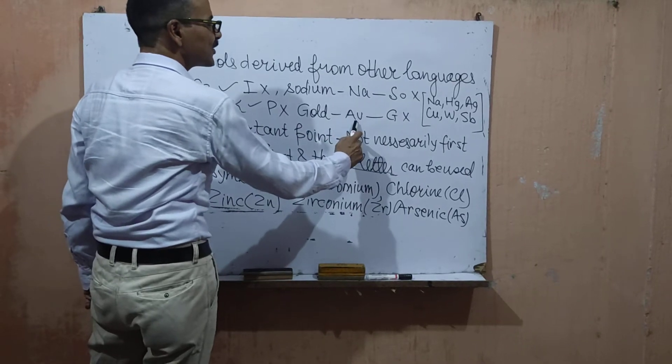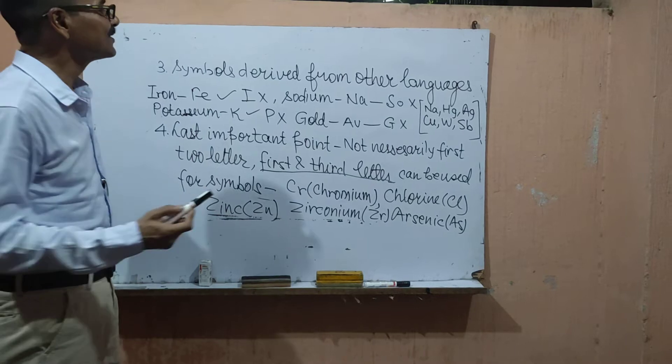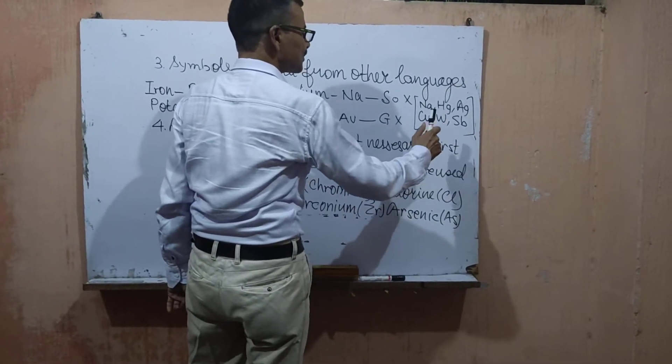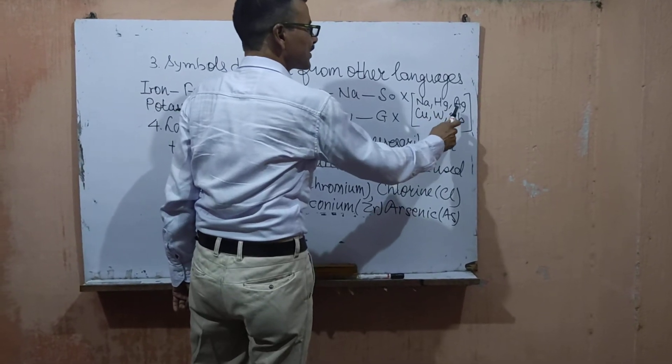Gold symbol is Au taken from Latin name Aurum, not gold G. Similarly other symbols which are taken from other languages are Na for sodium, Hg for mercury.